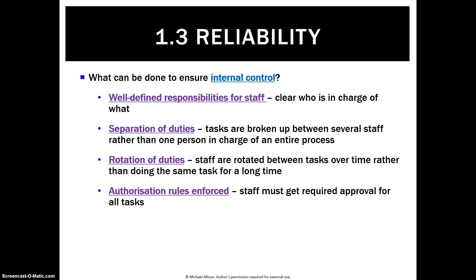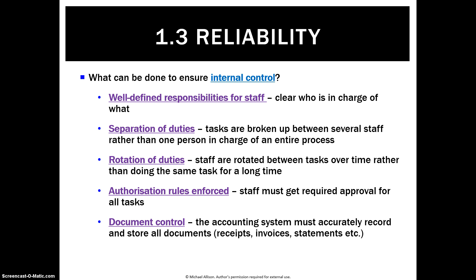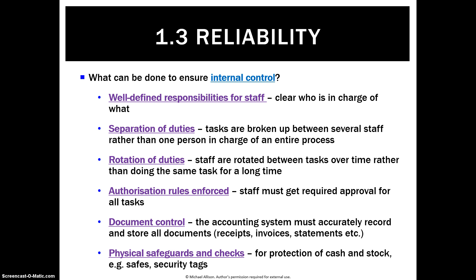We want to have authorization rules — for example, if you order something over $10,000, you need to get approval. We could have document control, which is probably the easiest and best way: make sure there are copies of everything and verifiable source documents — that's reliability itself. And lastly, there are always physical safeguards and checks. If any of us have ever walked into a store, we see security cameras, security tags, security gates at the door and so on. That's another way to protect your assets from theft and misrepresentation.